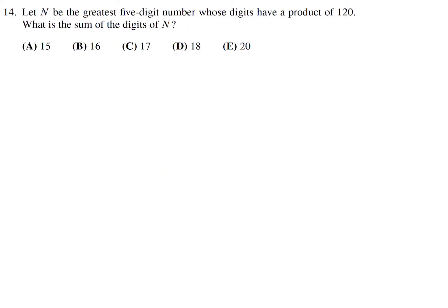Let N be the greatest 5-digit number whose digits have a product of 120. What is the sum of the digits of N? First, factor 120: it's 2 × 2 × 2 × 3 × 5. We need a 5-digit number where the digits multiply to 120. One option is using 5, 3, 2, 2, 2 — but that gives a digit sum of 14, which isn't among the answer choices.